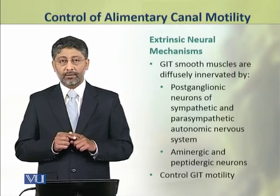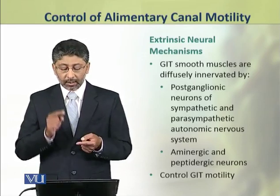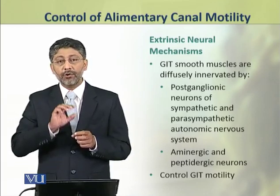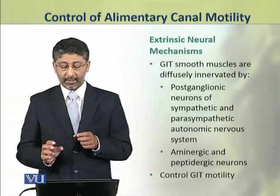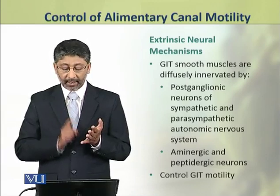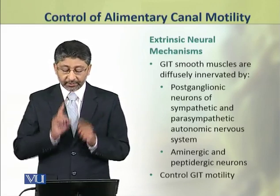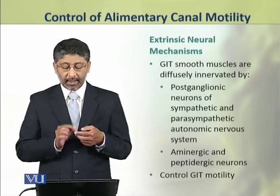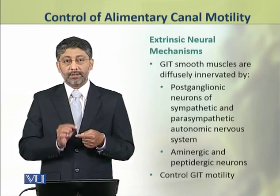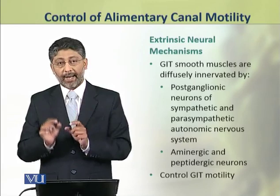Now we shall discuss the extrinsic neural mechanisms. The gastrointestinal tract's smooth muscles are diffusely innervated by postganglionic neurons of the sympathetic and autonomic nervous system. In addition, they are also innervated by aminergic and peptidergic neurons. These innervations of neurons control gastrointestinal tract motility.